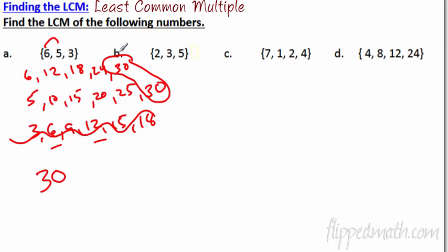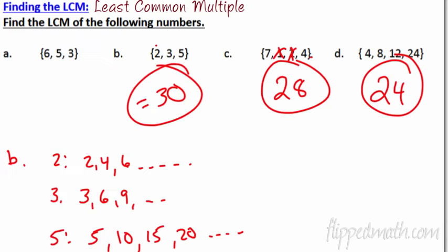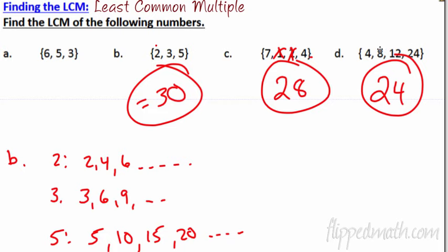Pause the video and do parts B, C, and D. For B: numbers 2, 3, and 5 — looking at 3 and 5, you get 15 then 30; 30 is even so it's a multiple of 2 — answer is 30. For C: you have 1, 2, and 4 — cross out 2 because 4 is a multiple of 2, and everything is a multiple of 1 — left with 7 and 4, giving 28. For D: 12 times 2 is 24, 8 times 3 is 24, 4 times 6 is 24 — so 24 is the LCM.